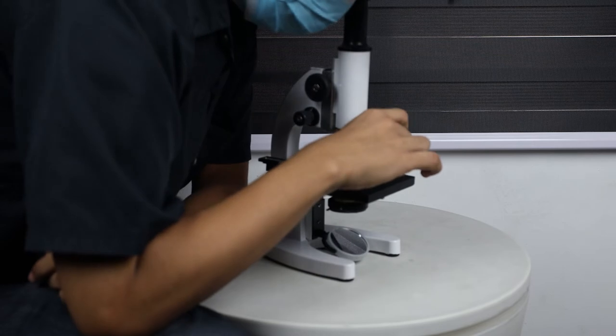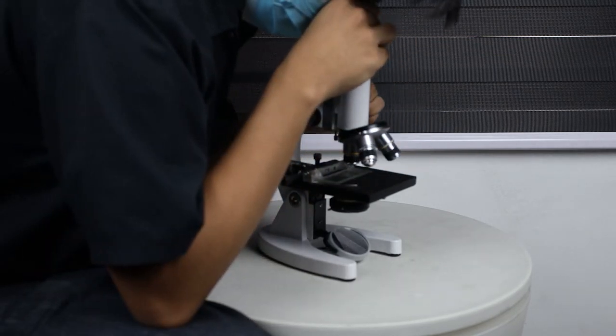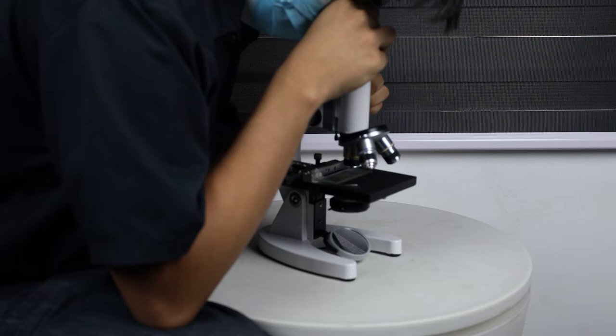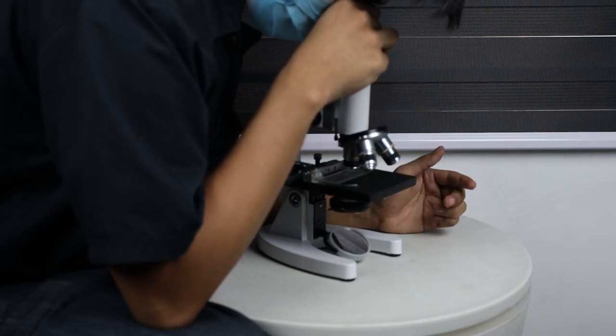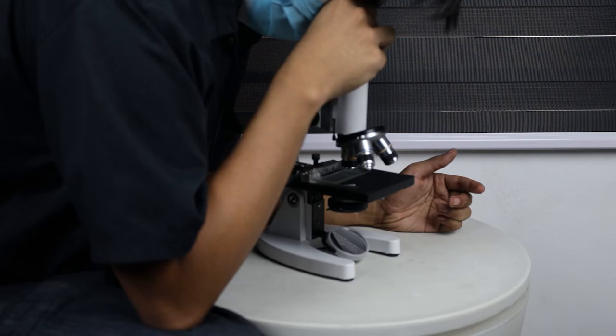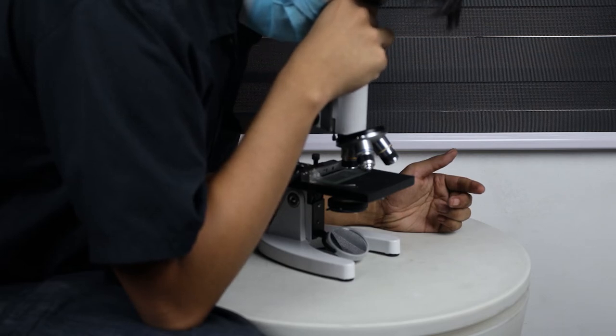Step 5: Turn the nose piece to choose the objective. Objective selected should be set vertically right to the slide. Generally, first use the low-power objective lens to focus to reveal the general structure image. Then use the high-power objective lens to reveal smaller details.